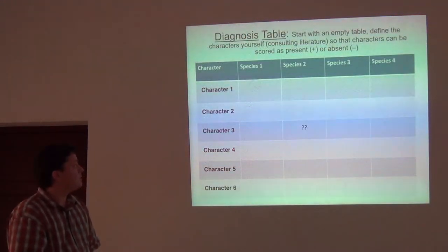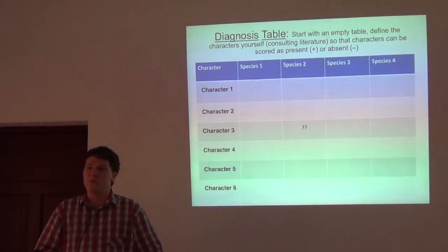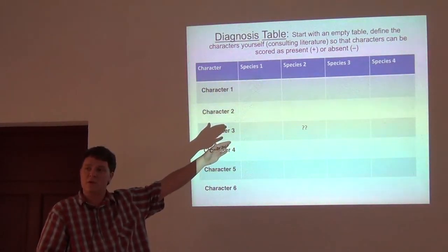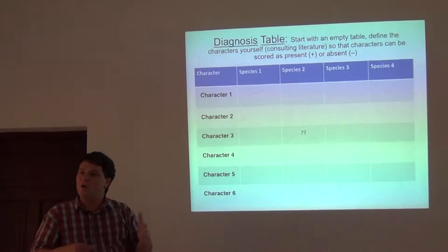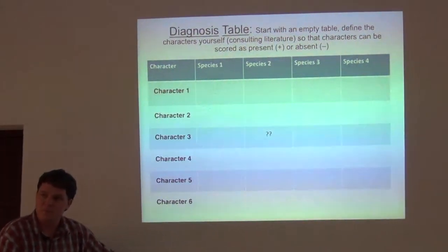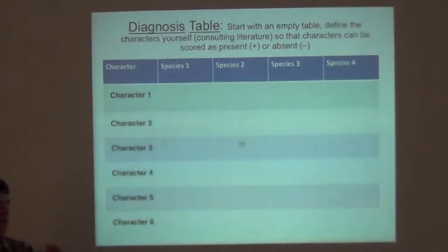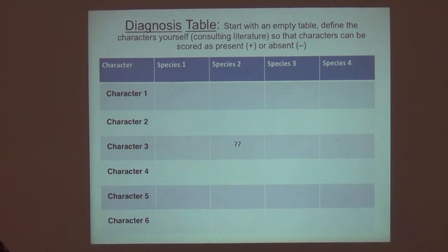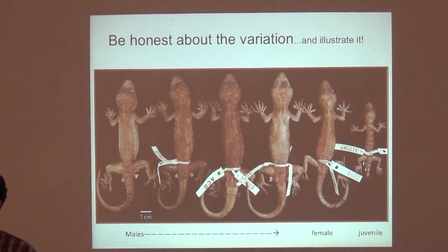This is where you should start: make yourself a table, make a list of your relevant species, and make a list of the characters. As you go, the more you look at specimens, you'll add additional characters to your table — there's nothing wrong with doing that. As you look at them and focus on these characters, you're going to start to see other ones, and that's exactly the process.